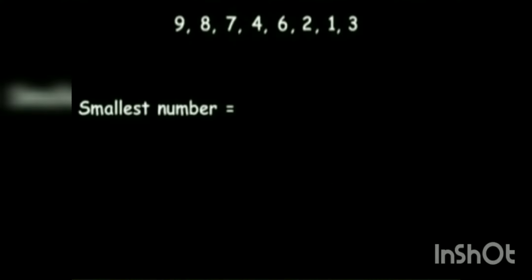So, for smallest number, we write digits in ascending order like this: 1, 2, 3, 4, 6, 7, 8, 9.